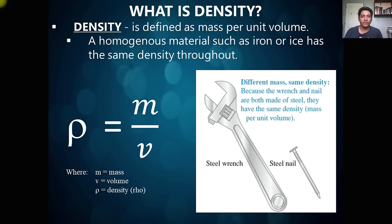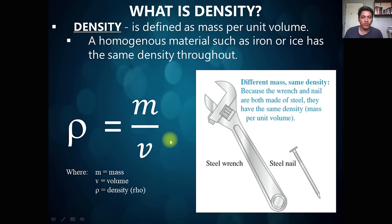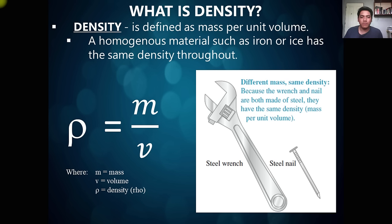Here are some important quantities when talking about fluid mechanics. We have what we call the density of the material. Density is defined as the mass per unit volume, represented by the Greek alphabet rho, equivalent to mass of the substance over the volume of the substance. The SI unit for density is kilogram per cubic meter, because volume is in cubic meters.